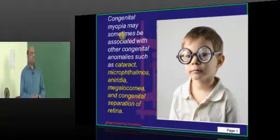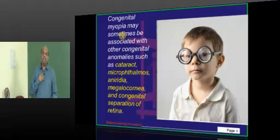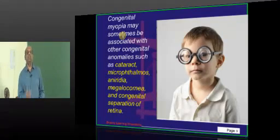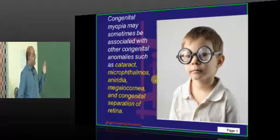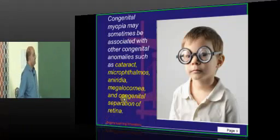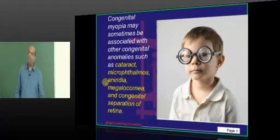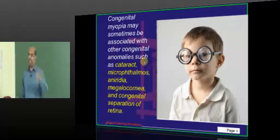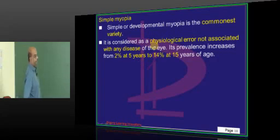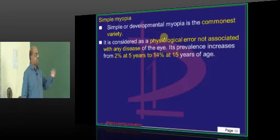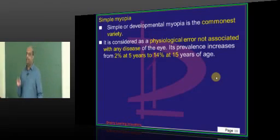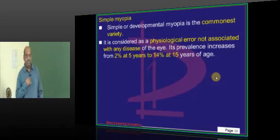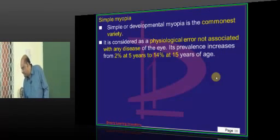There can be other congenital errors which lead to congenital myopia — especially any cataract, aniridia, microphthalmos, megalocornea, or congenital retinal detachment. Any of them can be predisposing factors for congenital myopia. Now, a favourite MCQ: what is the commonest variety of myopia? Simple or developmental myopia is the commonest variety.